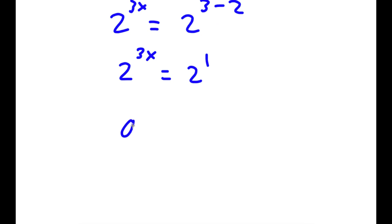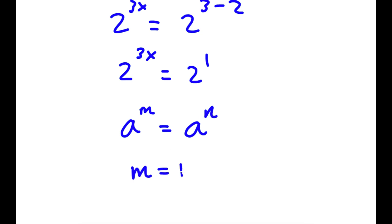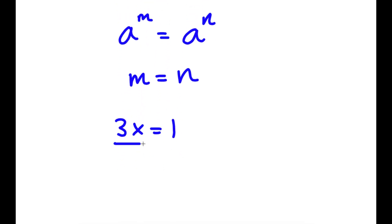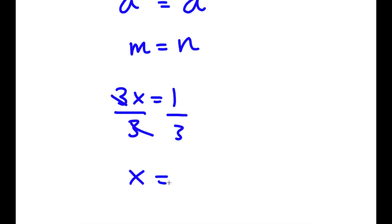Now, if I have something in the form a to the power of m is equal to a to the power of n, this means that m is equal to n. So in this case, 3x is equal to 1. And if I divide both sides by 3, I get x is equal to 1/3.